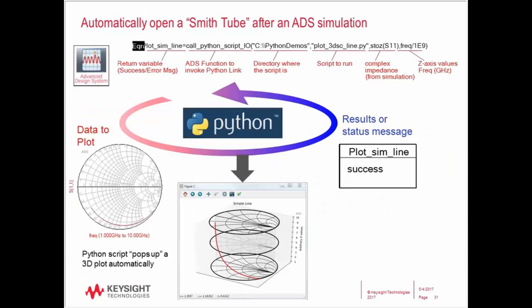Since we've got a library in Python that can do a 3D Smith Chart, we can also link this to an ADS simulation. This is the way I'm going to do it. We will use that ADS function, call Python script IO. Then I wrote a script, which is plot 3D Smith Chart lines, using that library. I'm going to transfer in some simulation data, in this case just a simple S11 simulation, complex impedance. I'm also going to specify frequency to be the Z axis.